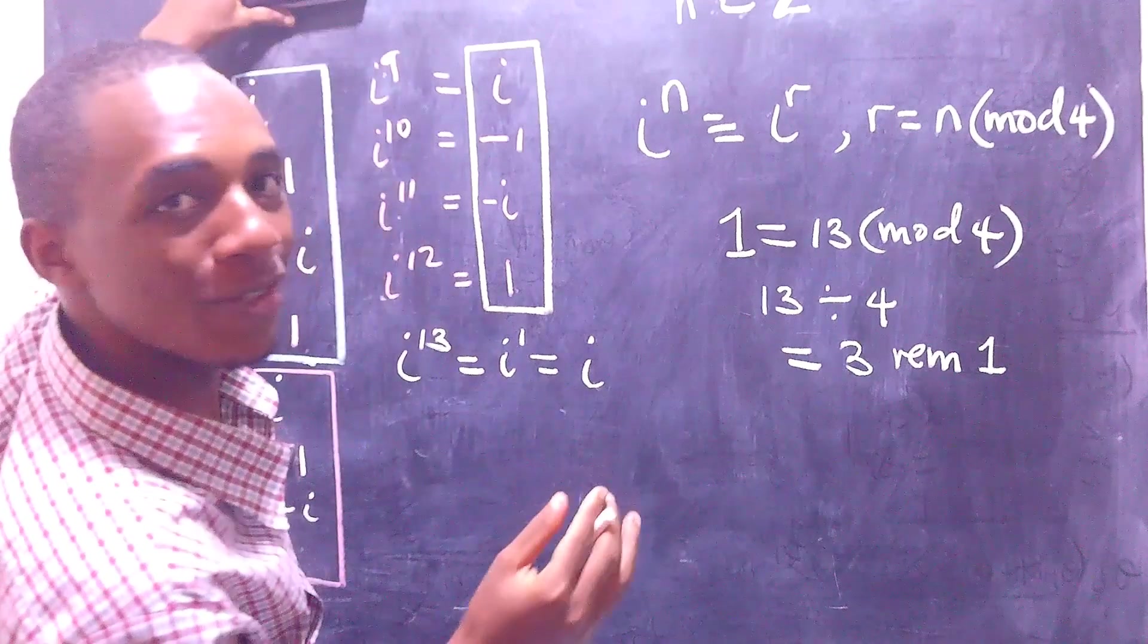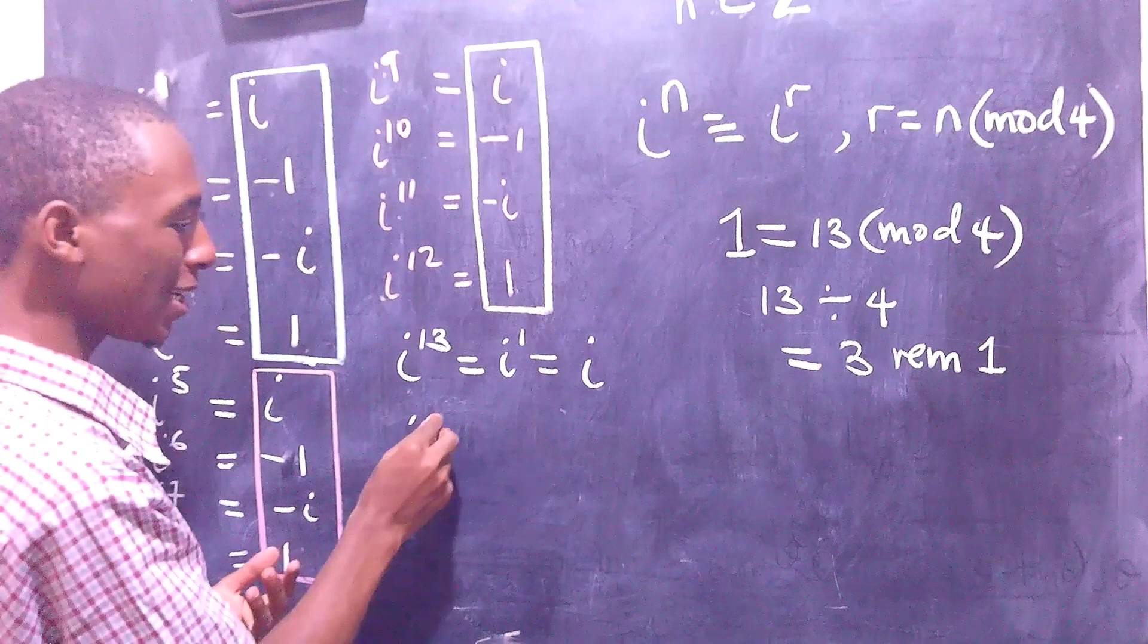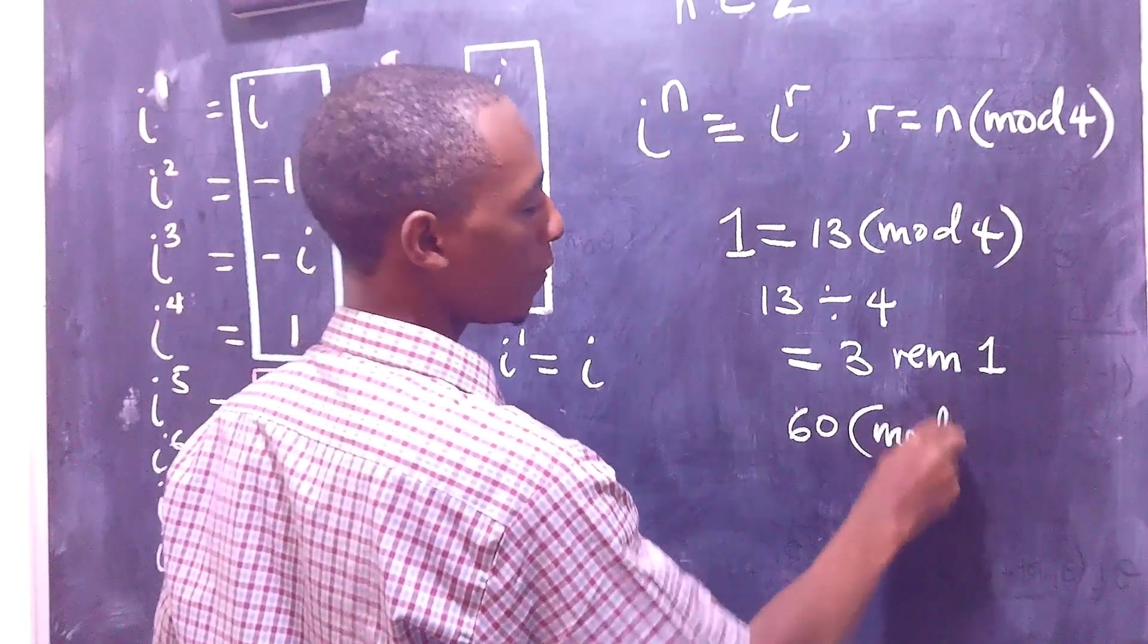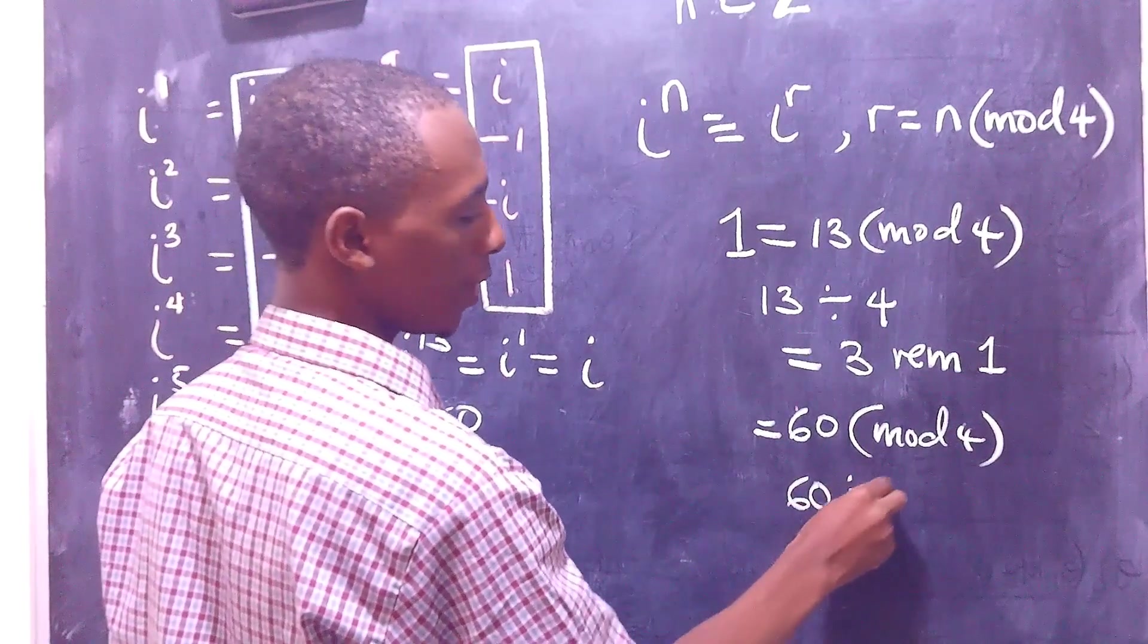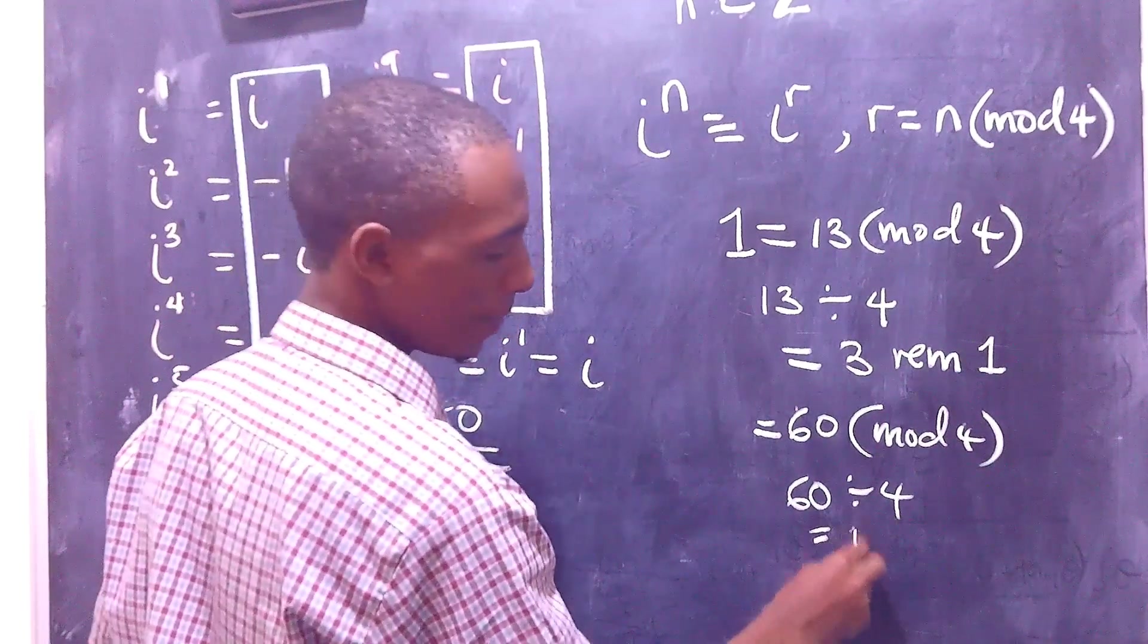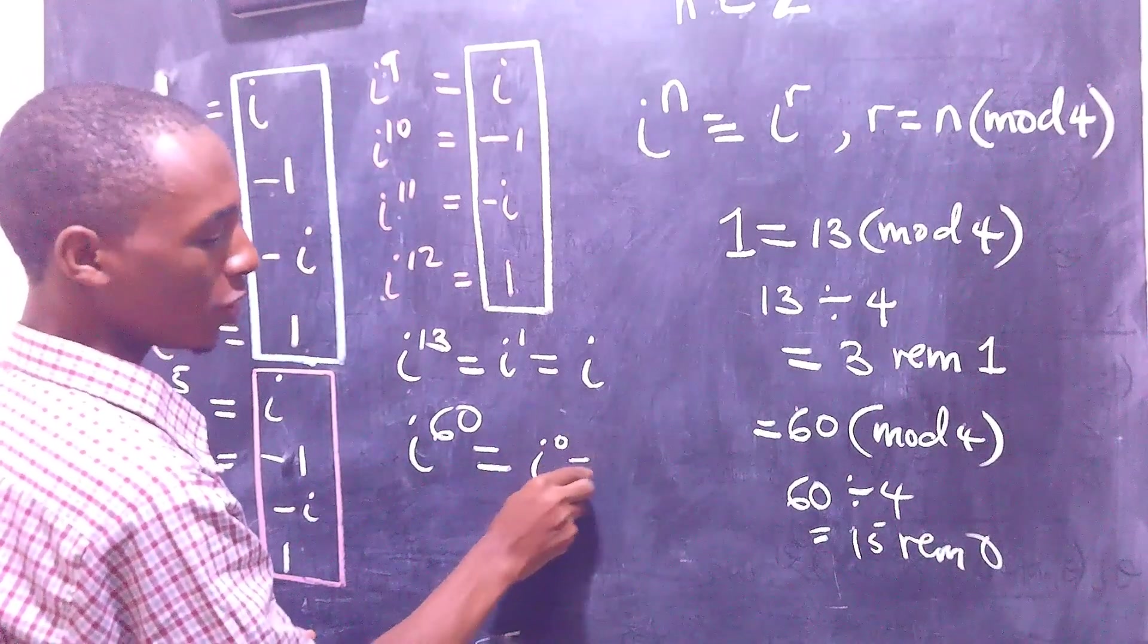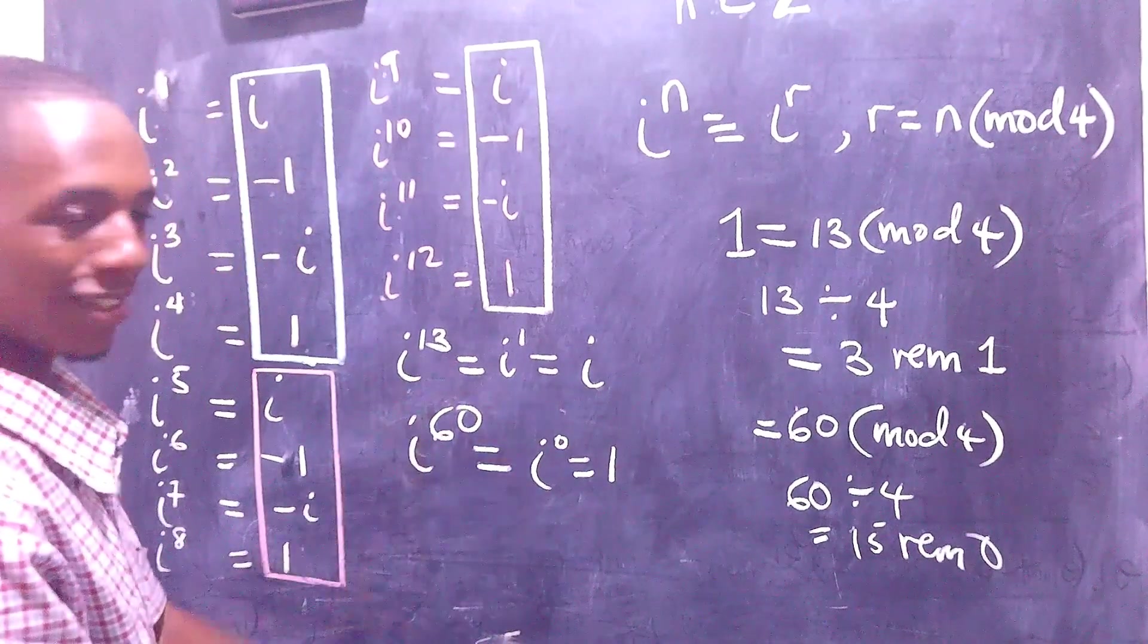I'll actually use the examples that I alluded to at the beginning, let's say i to the power 60. So 60 in mod 4, that's going to be 60 divided by 4, which is 15 remainder 0. So that's the same as i to the power 0, which is by the laws of indices just 1, and there you go.